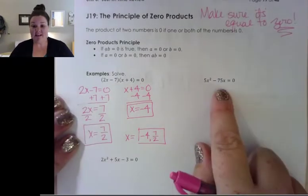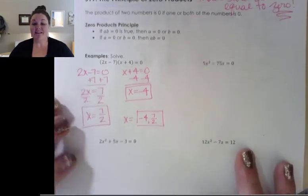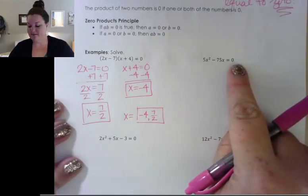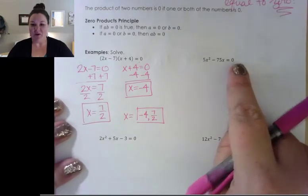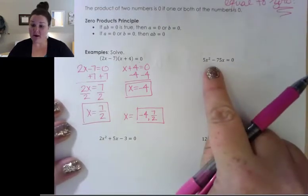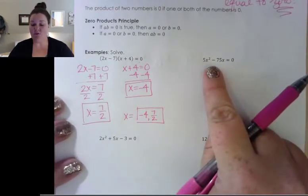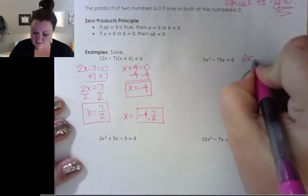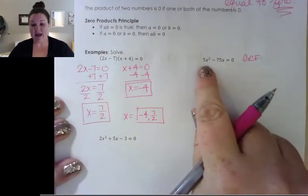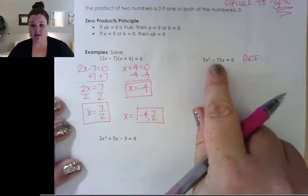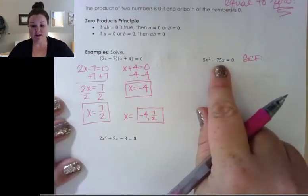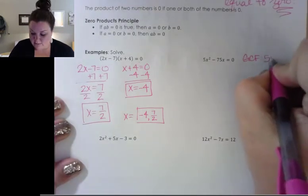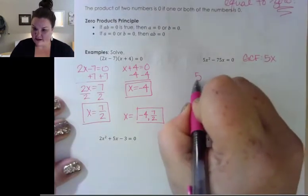Let's look at another one. This one is not factored for us, but it is equal to zero, so that's good — small victories. So we need to go ahead and factor this. The first thing I always do when I'm factoring is look for a greatest common factor. In this case, we have a greatest common factor — they're both divisible by 5 and they both have an x in common. So my greatest common factor is 5x.